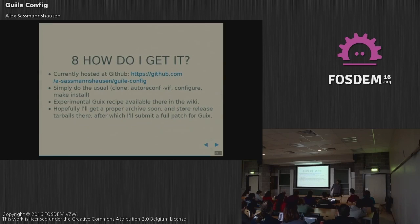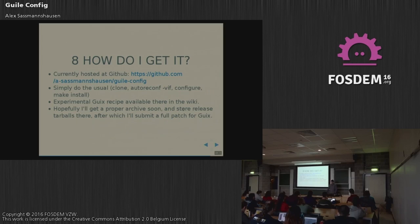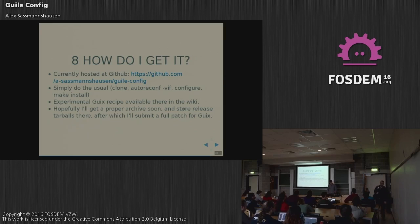You can get it at the moment — it's hosted on GitHub, which I have a love-hate relationship with. It's super simple but ambivalent on free software things, so I'm ambivalent towards it, but it's really easy to use. You can clone the repository, do autoreconf, then configure, then make install, and then it's fine. I also have an experimental Guix recipe which I will be submitting once I've released 0.1 fully and have an archive with the release tarball, so I'll submit that to Guix as well.